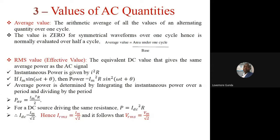The average value is the arithmetic average of all alternating quantities over one cycle. For a symmetrical waveform over one full cycle, the area above equals the area below, so the average is zero. Because of this, when dealing with AC quantities we talk about the RMS value instead of the average.